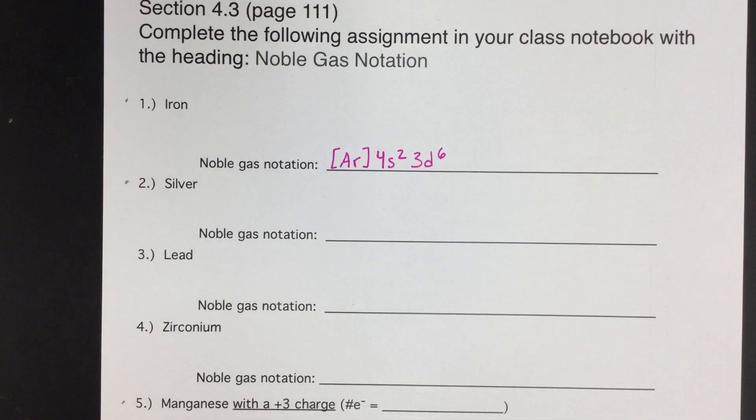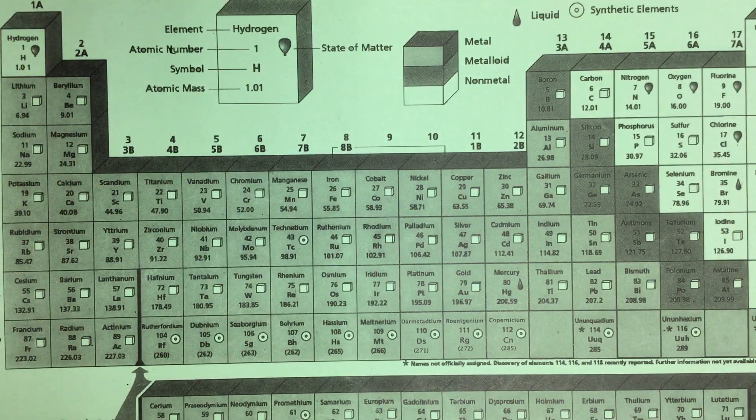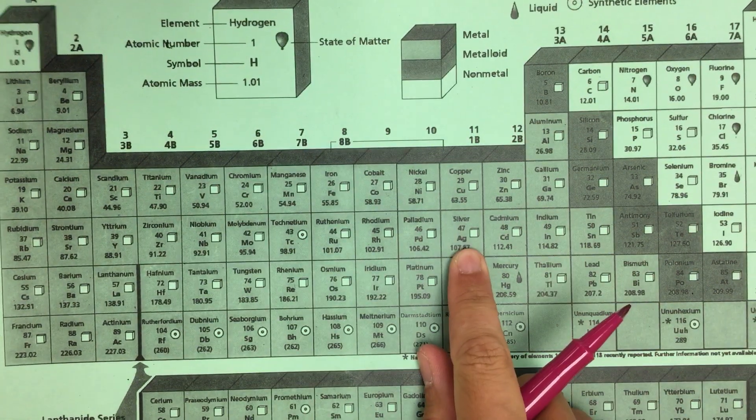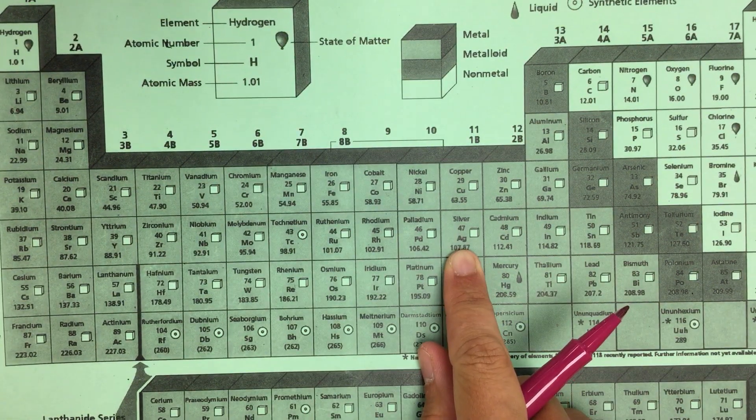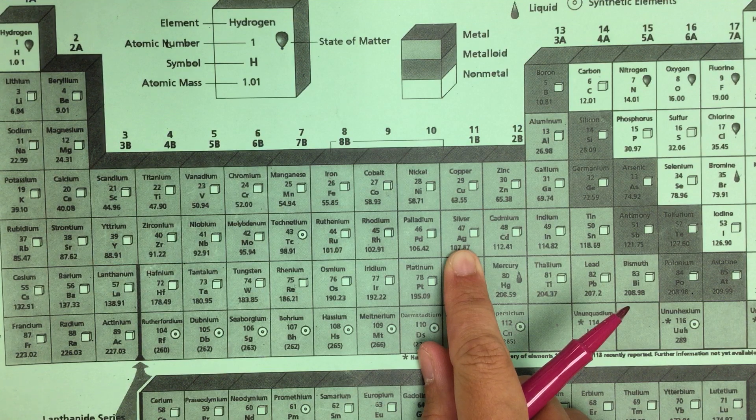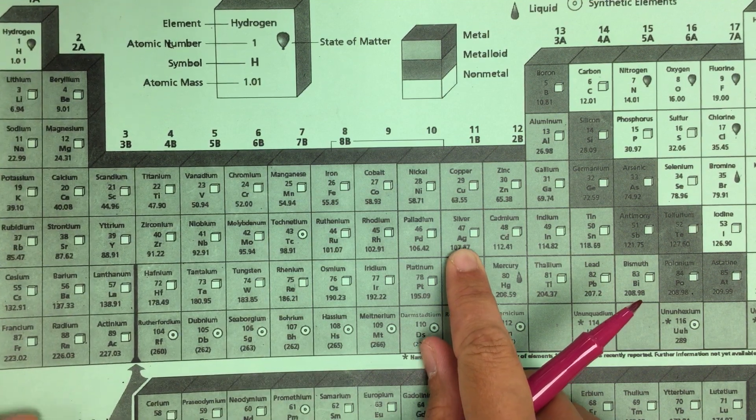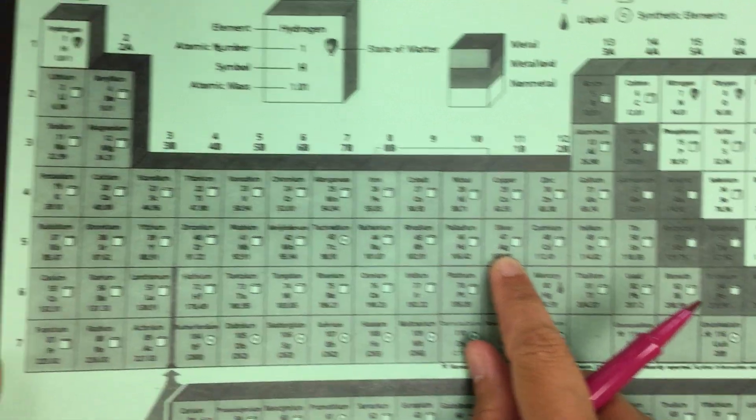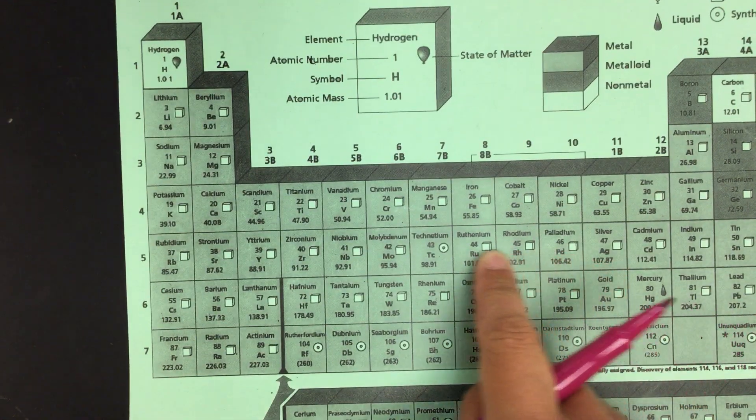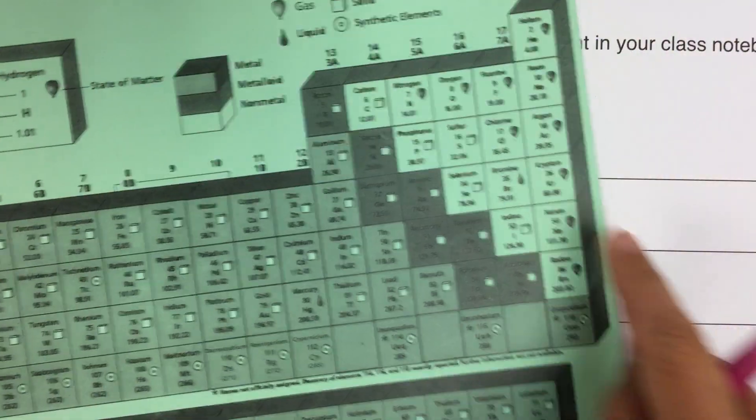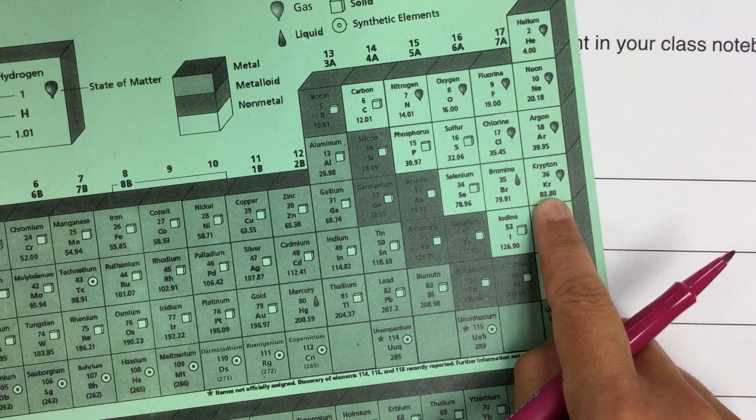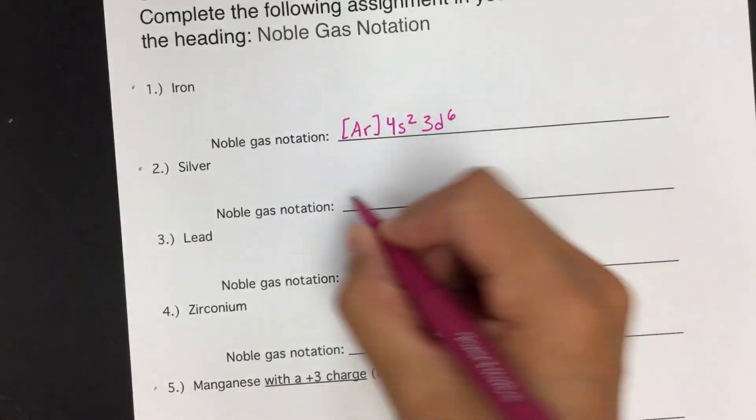Pretty nice, huh? So let's do one more for silver. All right, so when you look at your periodic table, you find silver down here. So what we're going to do is, same thing, we're going to go back to the previous noble gas. We're going to go backwards, backwards, backwards. We hit krypton. So we're going to start with that, krypton in brackets.